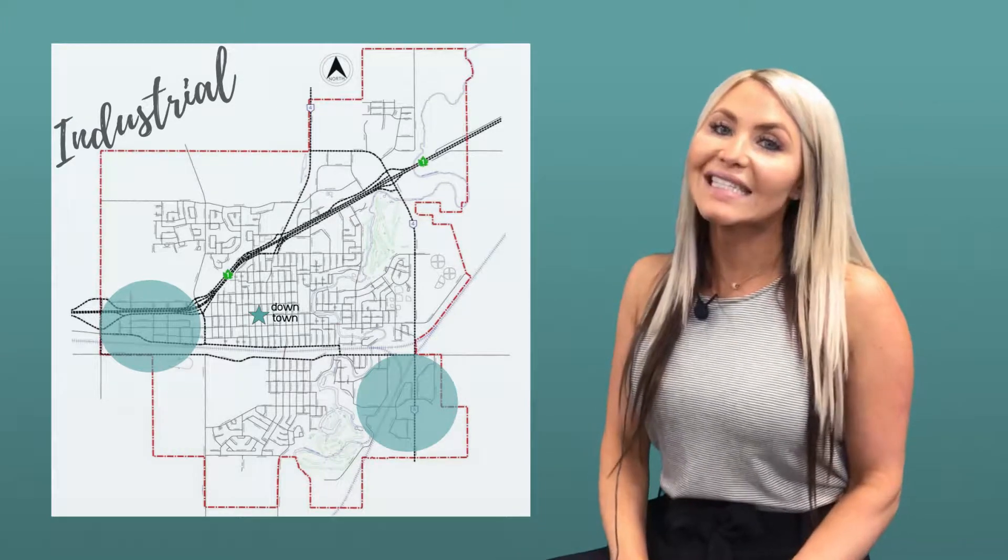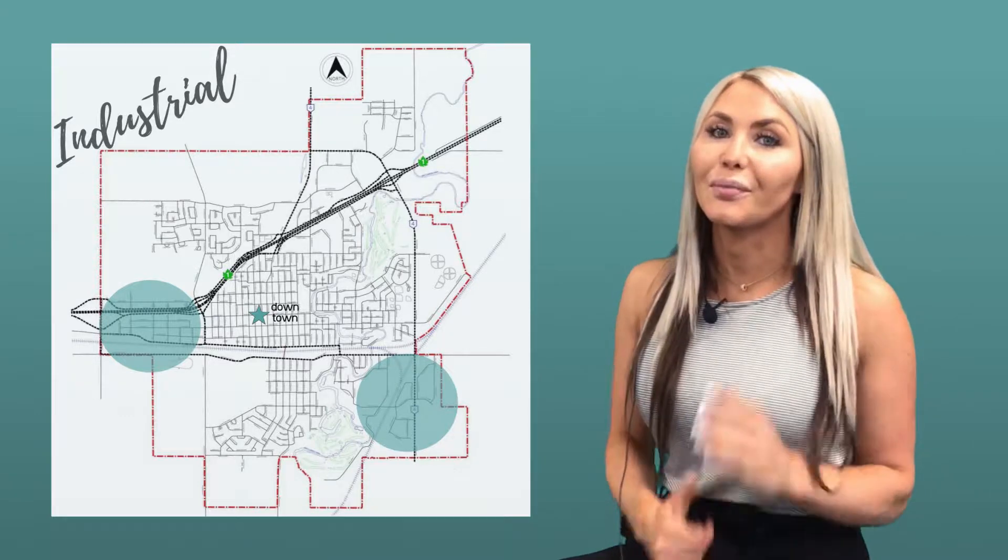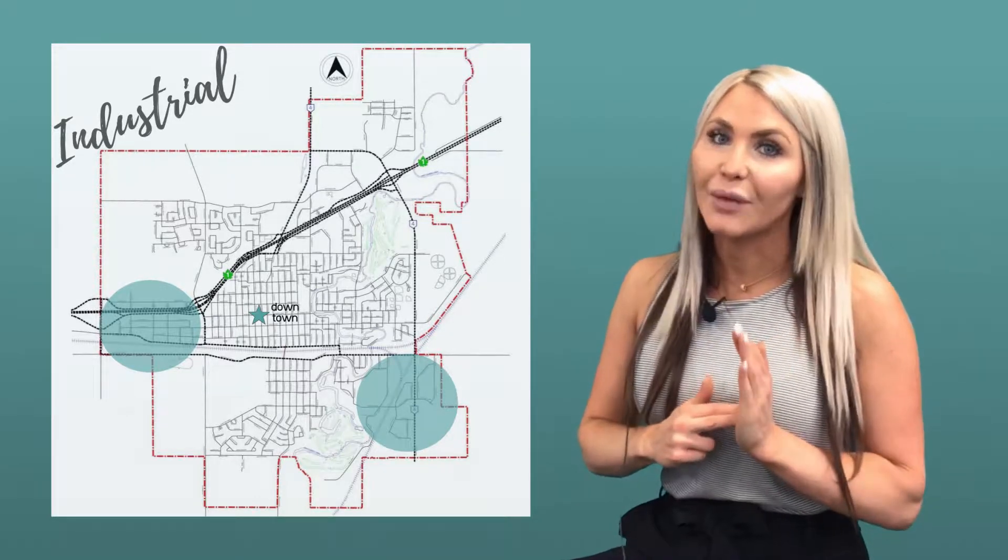Swift Current is home to a vast industrial sector with some highlighted industrial areas that include Monroe Industrial, West Industrial, McIntosh Industrial and more.